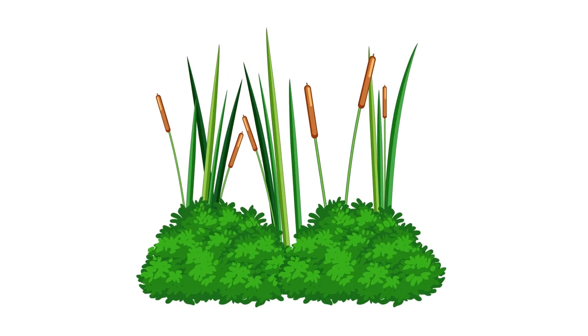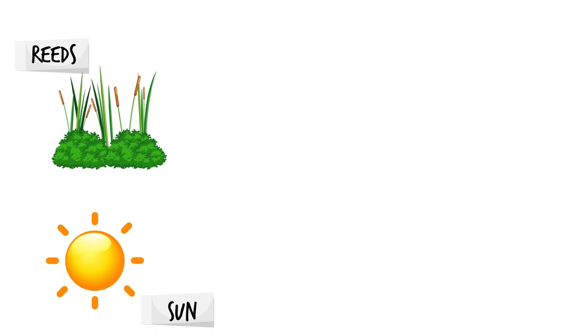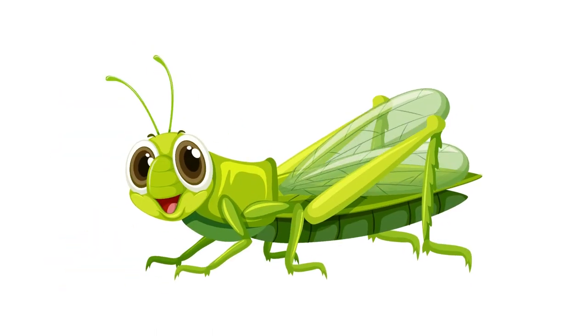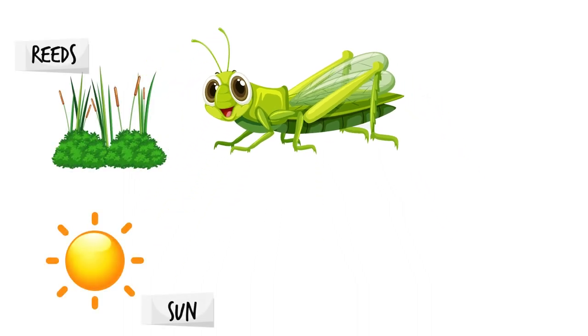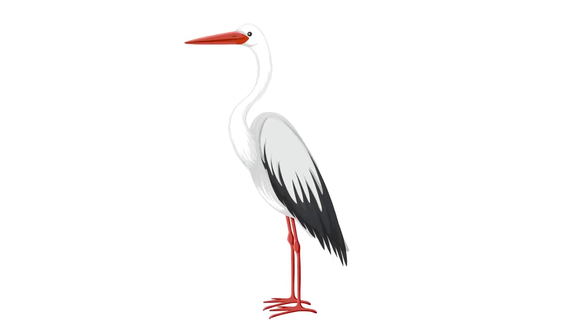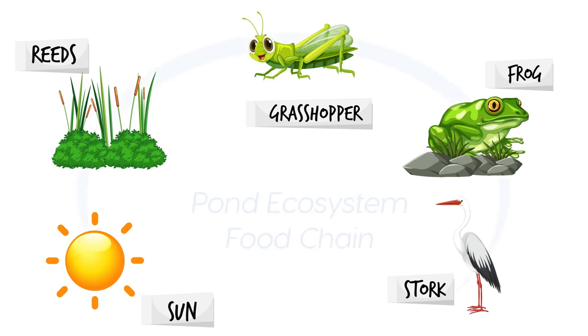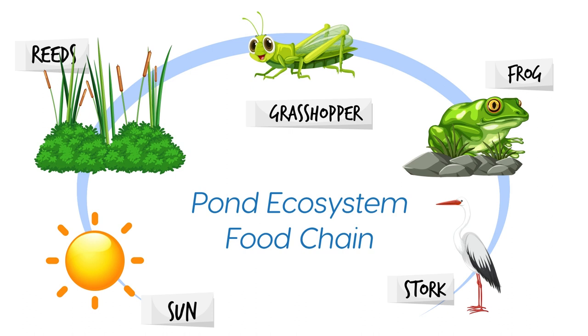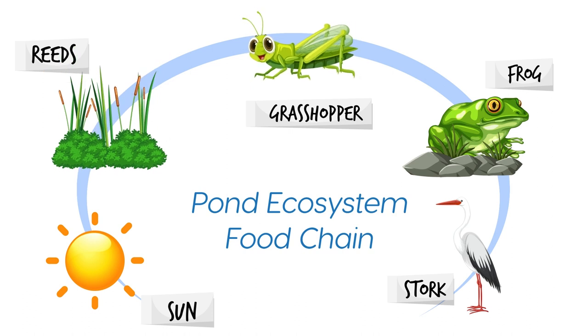Let's have a look at the stages again: Sun, Reeds, Grasshopper, Frog, Stork.